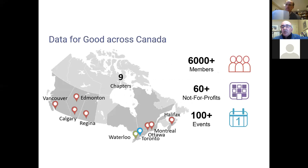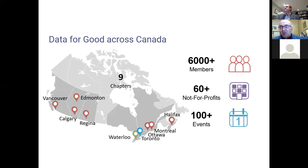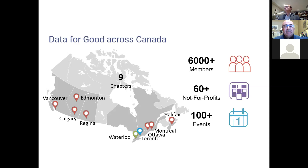Data for Good Calgary is one chapter of a national not-for-profit organization. My name is Jeff Zakabe and I'm the chapter lead here in Calgary. I also sit on the board of the national organization. We have chapters across Canada — in Toronto, Ottawa, Montreal, Halifax, Waterloo, Regina, Edmonton, and Vancouver as well.